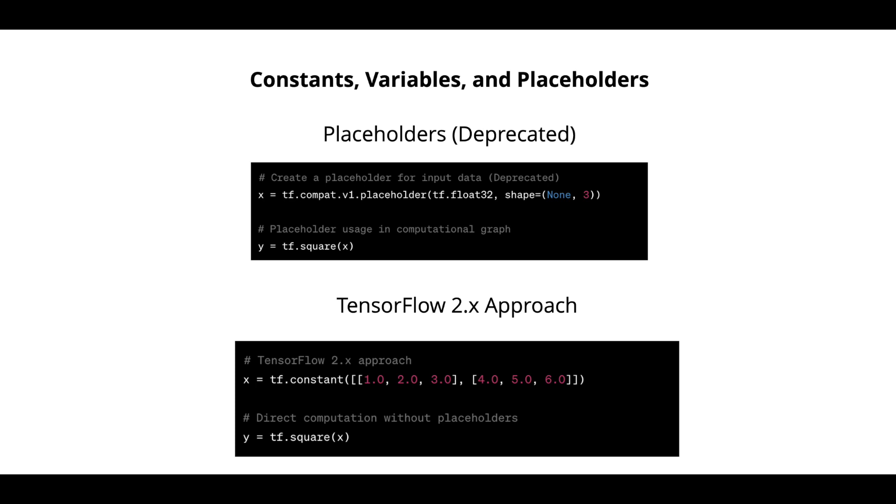In tensorflow 2.x, placeholders have been replaced by eager execution, simplifying the process of building and executing tensorflow graphs. Constants and variables remain essential components for defining tensors in tensorflow with variables used primarily for holding model parameters during training.